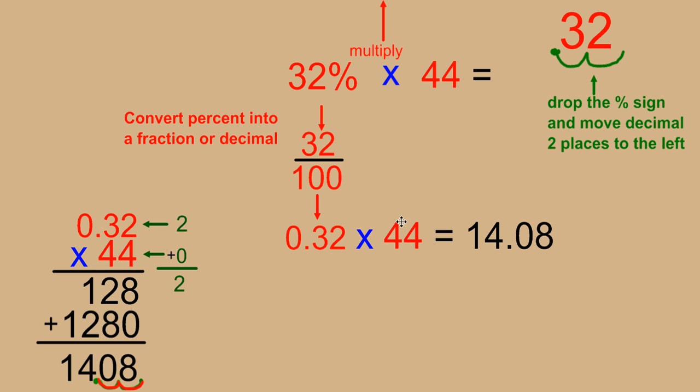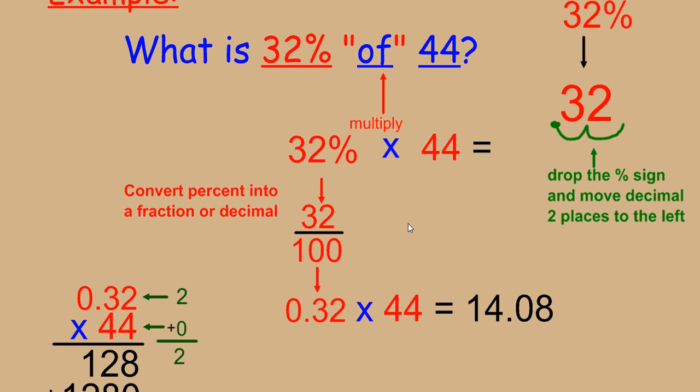My last recommendation is always make sure that answer is reasonable. We know 32% is going to be about a third of 44. And so you could just take 44 divided by 3 and see if it's pretty close to this.